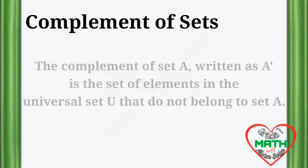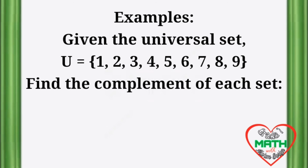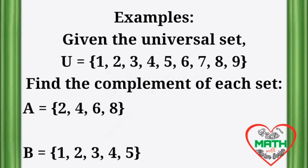Complement of Sets. The complement of set A, written as A complement, is the set of elements in the universal set U that do not belong to set A. For example, given the universal set U equals {1, 2, 3, 4, 5, 6, 7, 8, 9}, find the complement of each set: A equals {2, 4, 6, 8} and set B equals {1, 2, 3, 4, 5}.